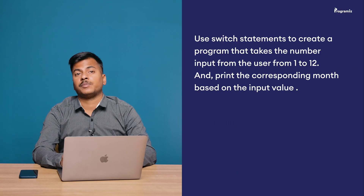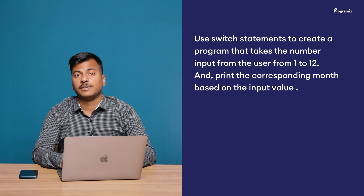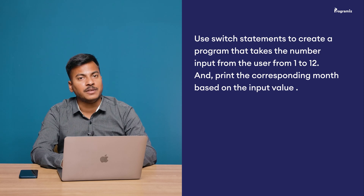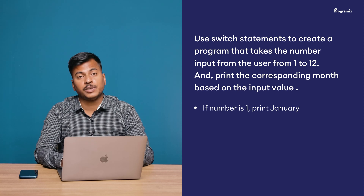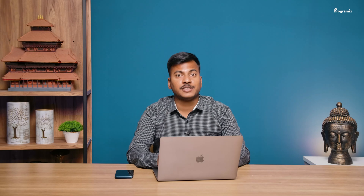Now it's time to practice what you've learnt. Here's a programming task for you: use the switch statement to create a program that takes a number input from 1 to 12 and based on that, print the corresponding month. So if the number is 1, print January; if the number is 2, print February and so on. You'll find the answer to this question in our GitHub repository, along with all these programs. I'll put the link in the video description below.